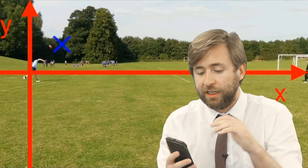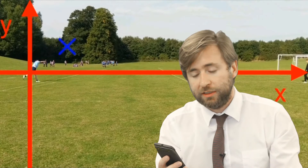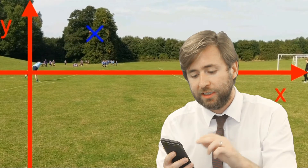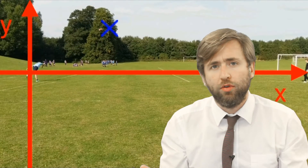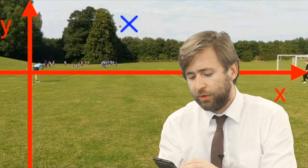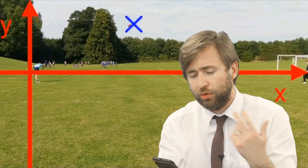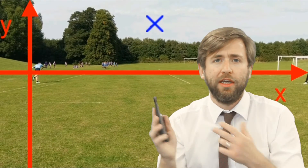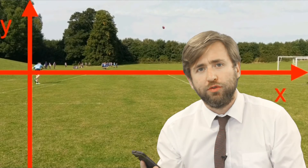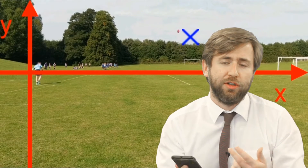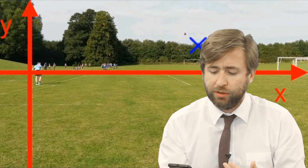Hit the tick and then you're in the analysis section. All you're doing really is clicking on the ball every single frame and it's going to record its position against that x-y axis that you've got there, and hence you're going to get your different graphs.